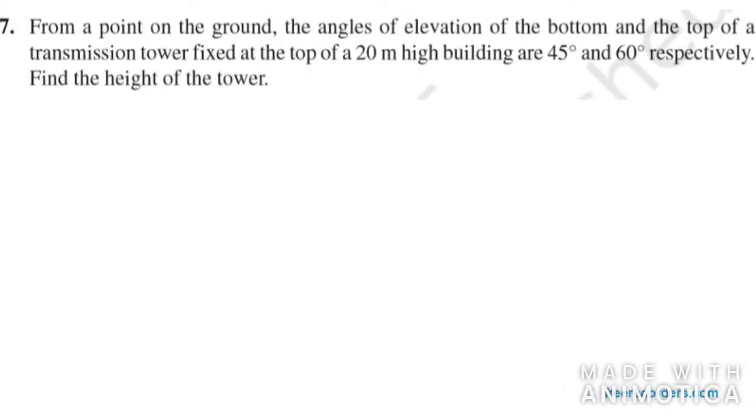Hello all, let's start with question number 7 of chapter 9. It says from a point on the ground, let point A be the point on the ground, the angle of elevation of the bottom and top of a transmission tower fixed at top of a 20 meter high building. That means we have a 20 meter high building.